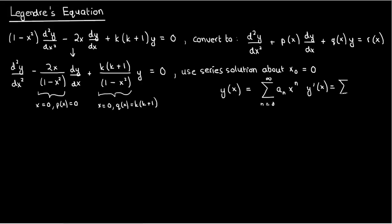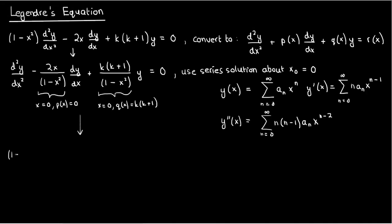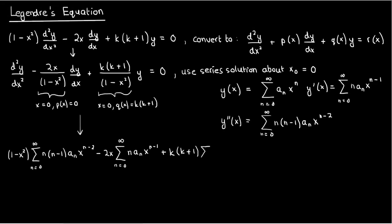To get the first derivative, bring the n down and reduce the power by 1, giving the sum from n equals 0 to infinity of aₙ times n times x to the n minus 1. For the second derivative, bring n minus 1 down and reduce the power by 1 again. Substituting into the ODE gives 1 minus x squared times the second derivative sum, minus 2x times the first derivative sum, plus k times k plus 1 times the original series, all equals 0.